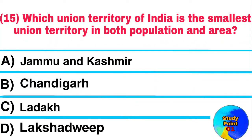Question: Which union territory of India is the smallest in both population and area? Answer: Lakshadweep.